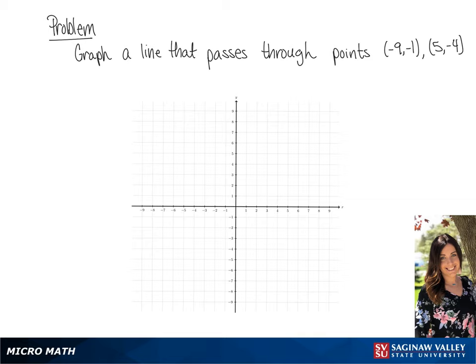We're going to graph negative 9, negative 1, so we're going to go left 9 and down 1.